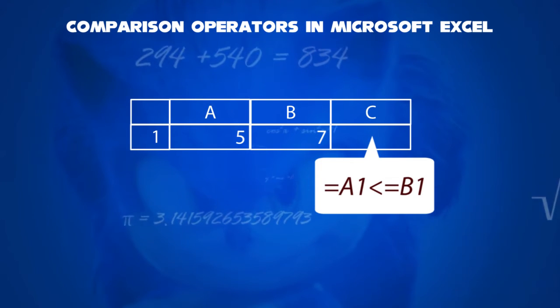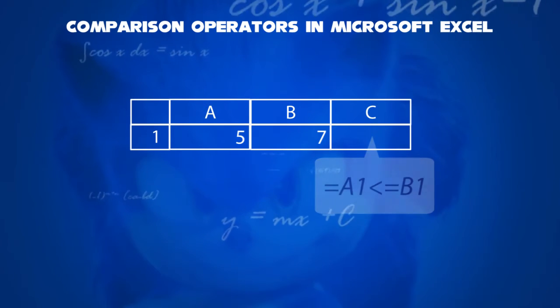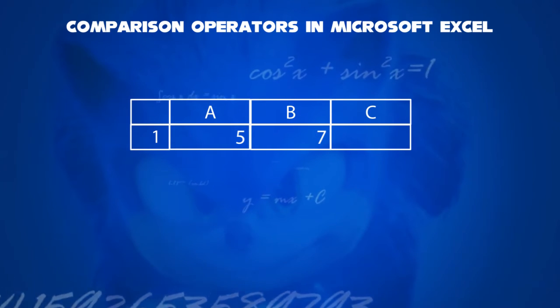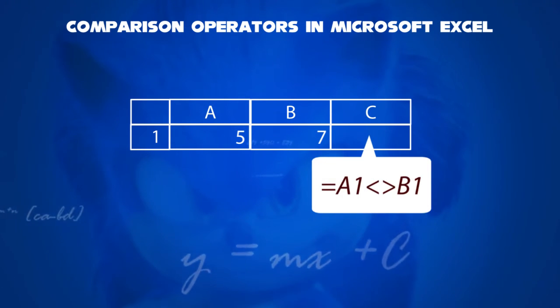And finally, the sixth one: not equal to sign. Both less than and greater than sign together, instead of strikethrough on the equal sign. That is A1 is not equal to B1 with both signs together.